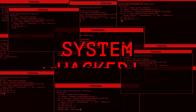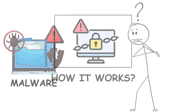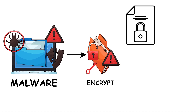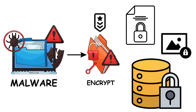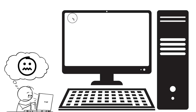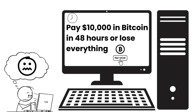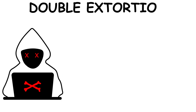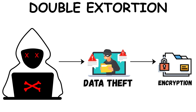Method 3: Ransomware Extortion. Ransomware doesn't just lock files — it destroys businesses. Malware encrypts your documents, photos, and databases with military-grade encryption. A note appears: 'Pay $10,000 in Bitcoin in 48 hours or lose everything.'